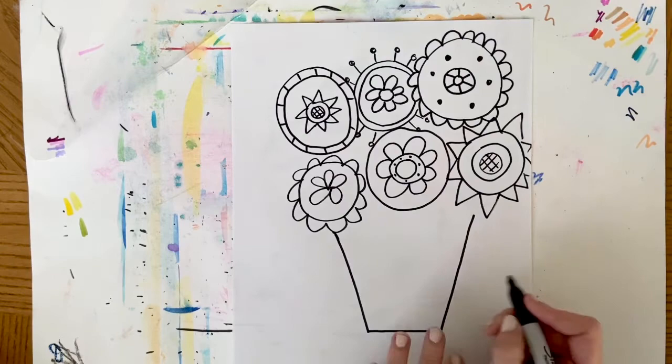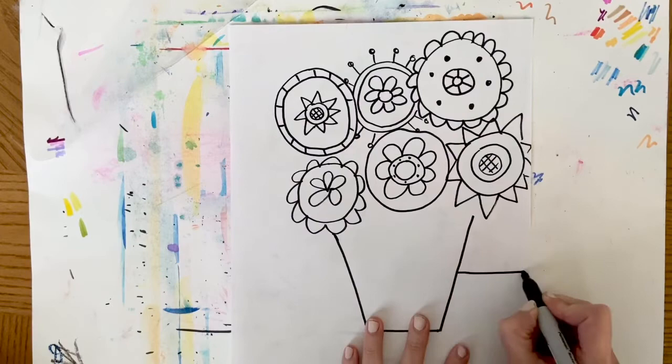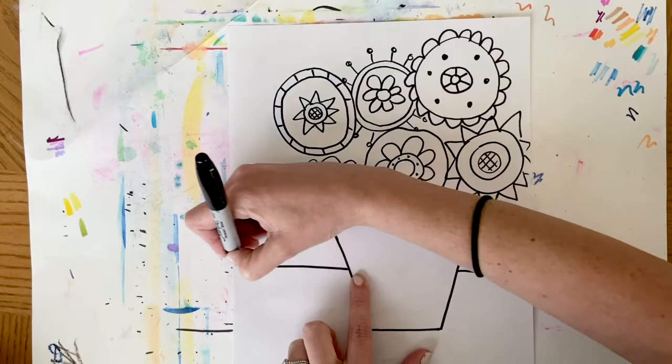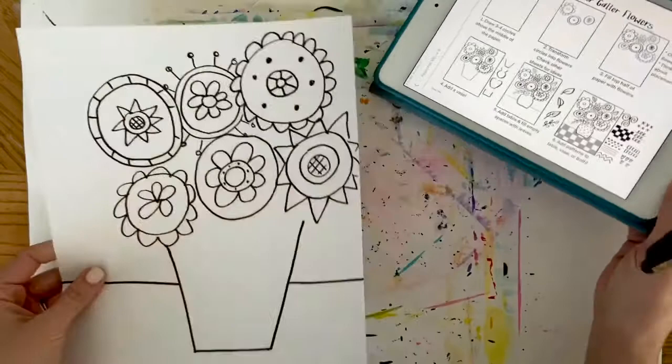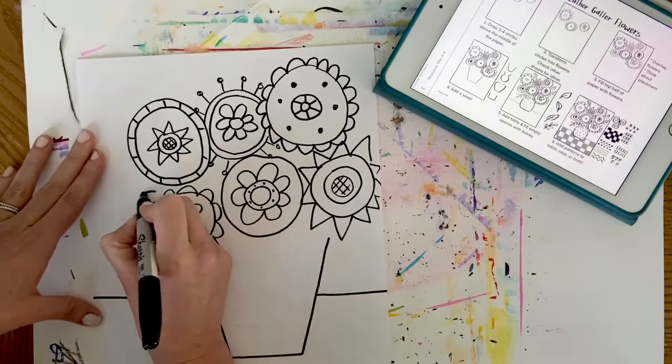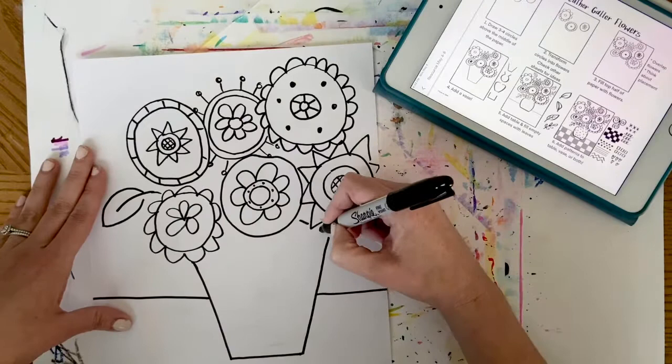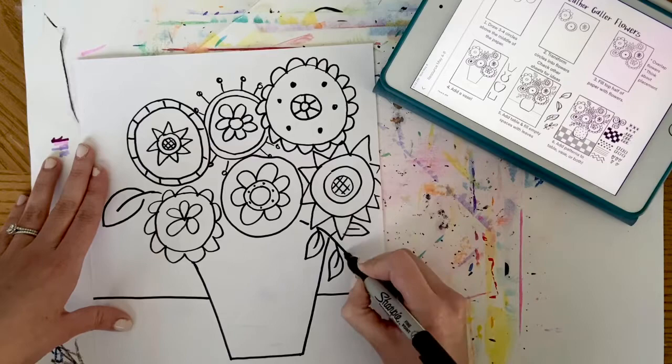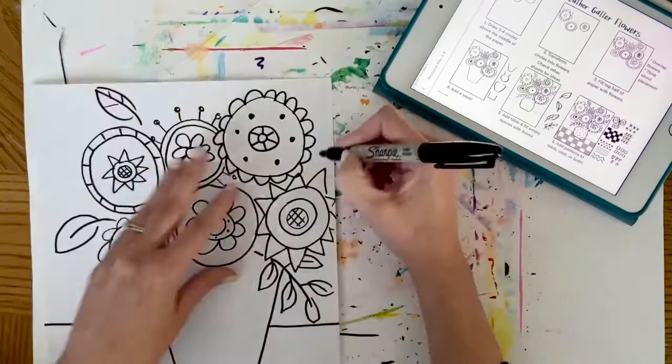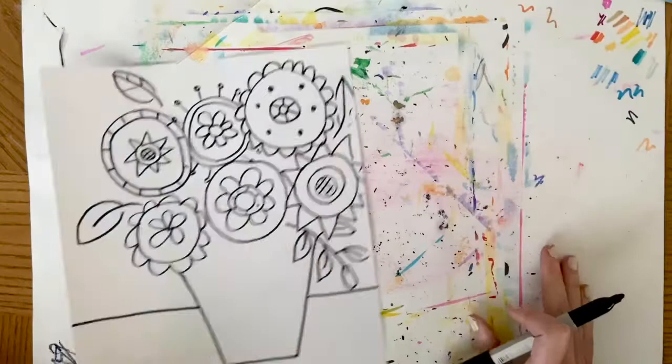Before I add my leaves, I'm going to add the table. So I'm going to draw a line through the middle of the vase, but I stop when I get to it. So it goes one way and then it finishes on the other side. Now your handout can help you again as you draw some leaves to fill in some empty space. And there I have my leaves.